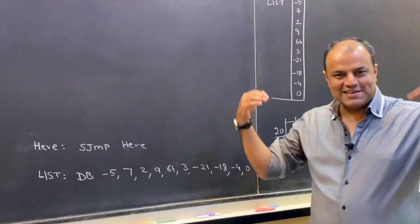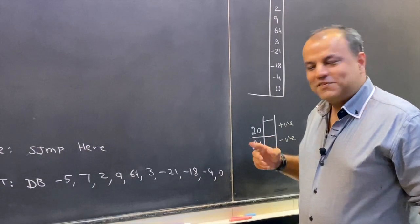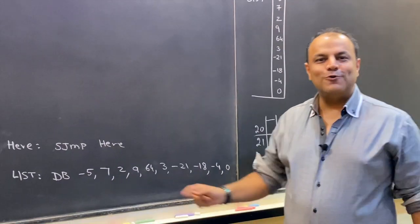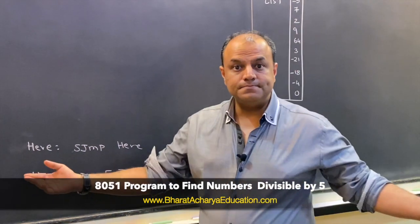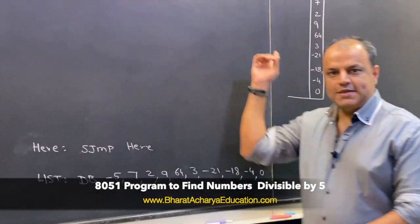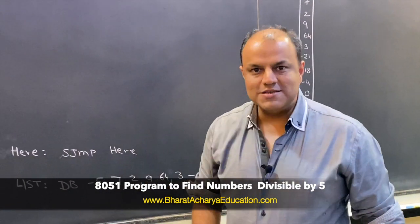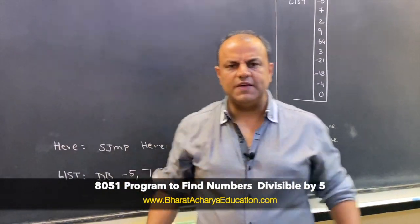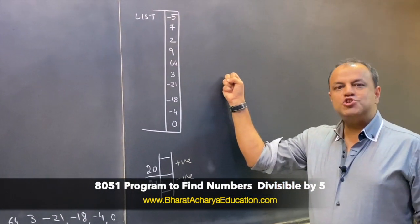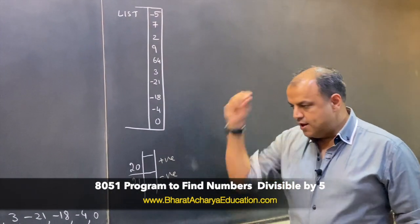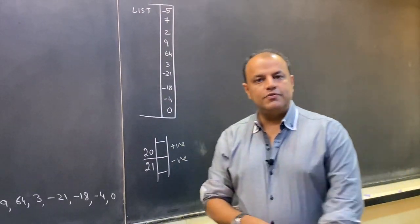Here is your question. I'm going to give you a challenge now. This just came up in my mind right now. Once you know this program to find positive and negative numbers, I change the question. Now write a program to determine how many of these numbers are divisible by five. It's still a series of numbers. The method of looping, the method of count, the method of accessing the data, all of that remains the same.